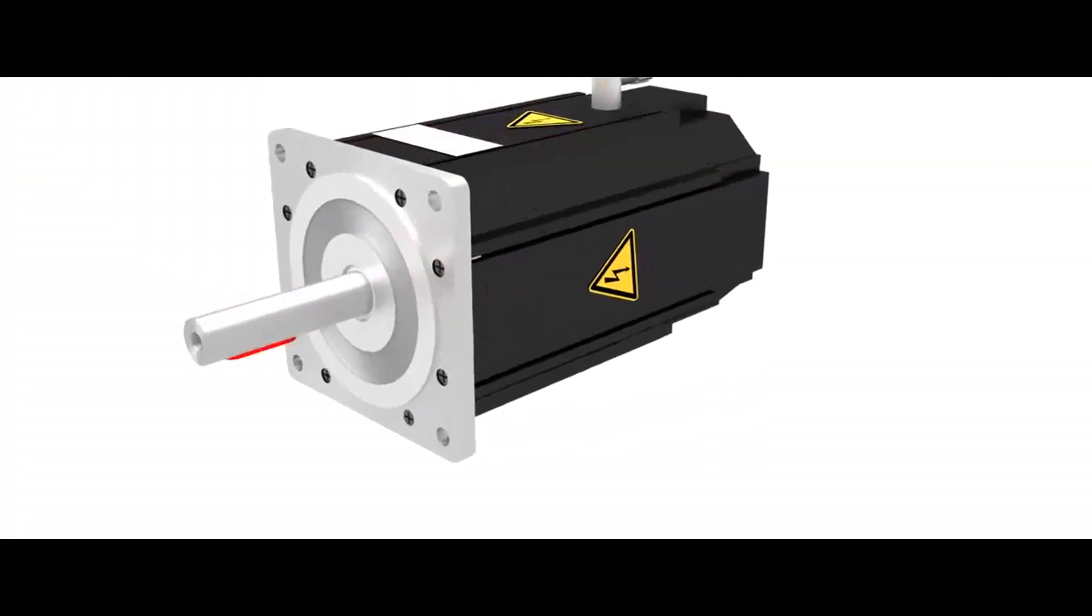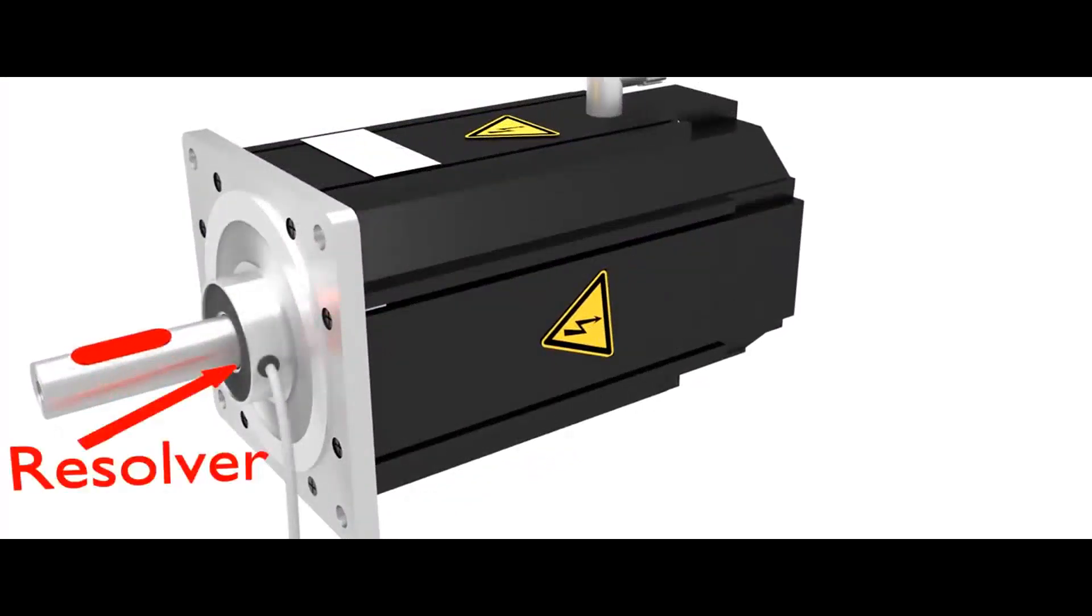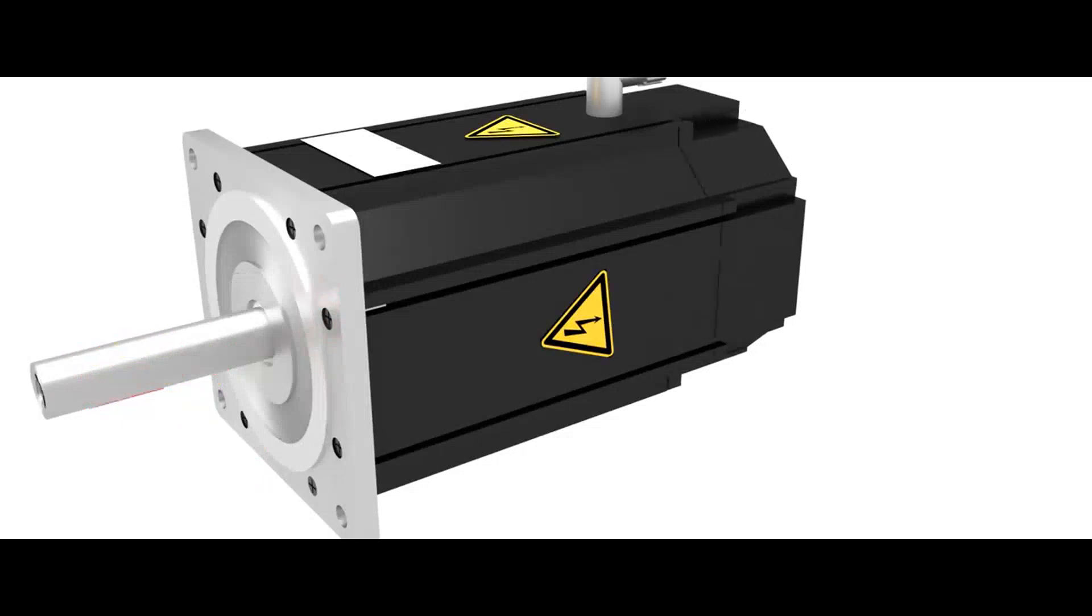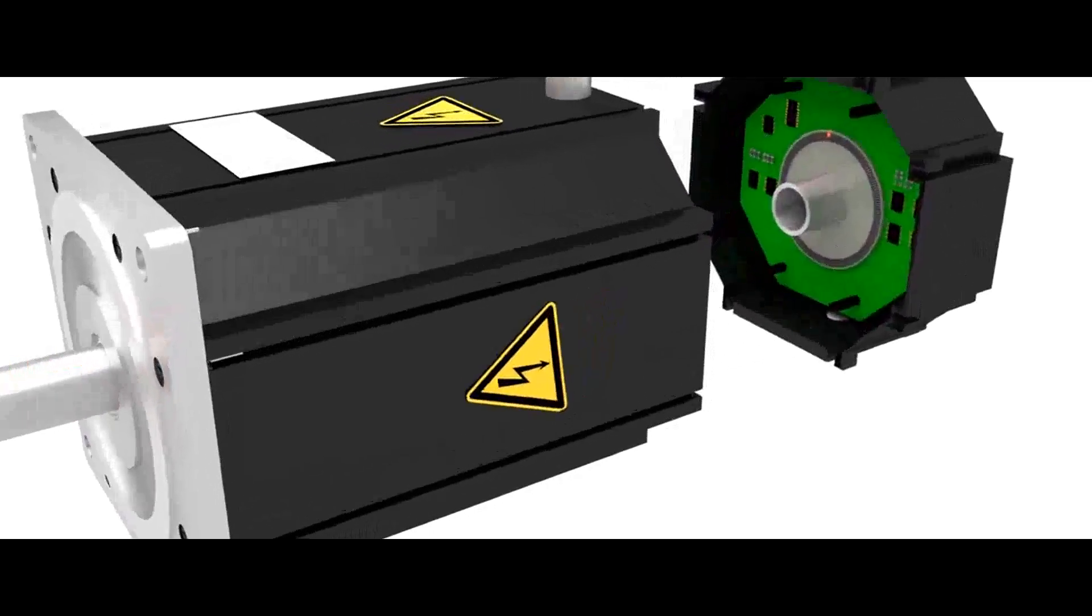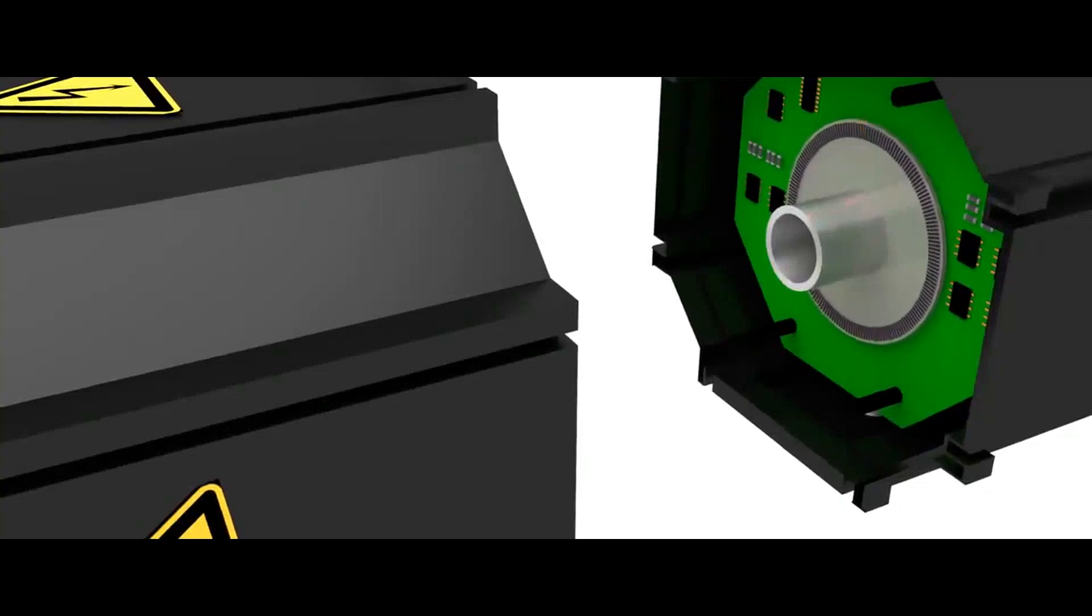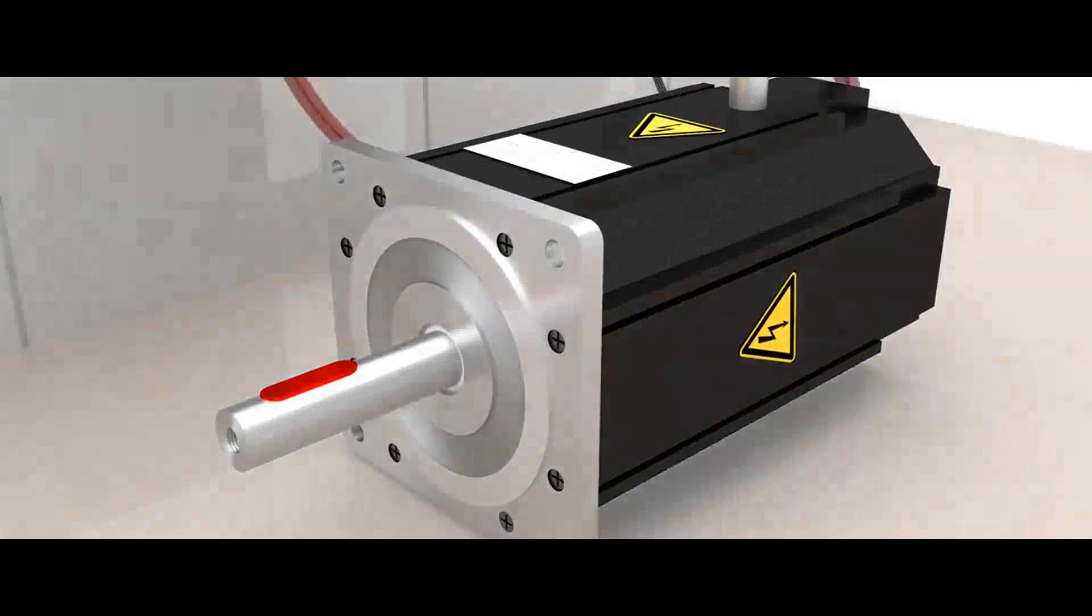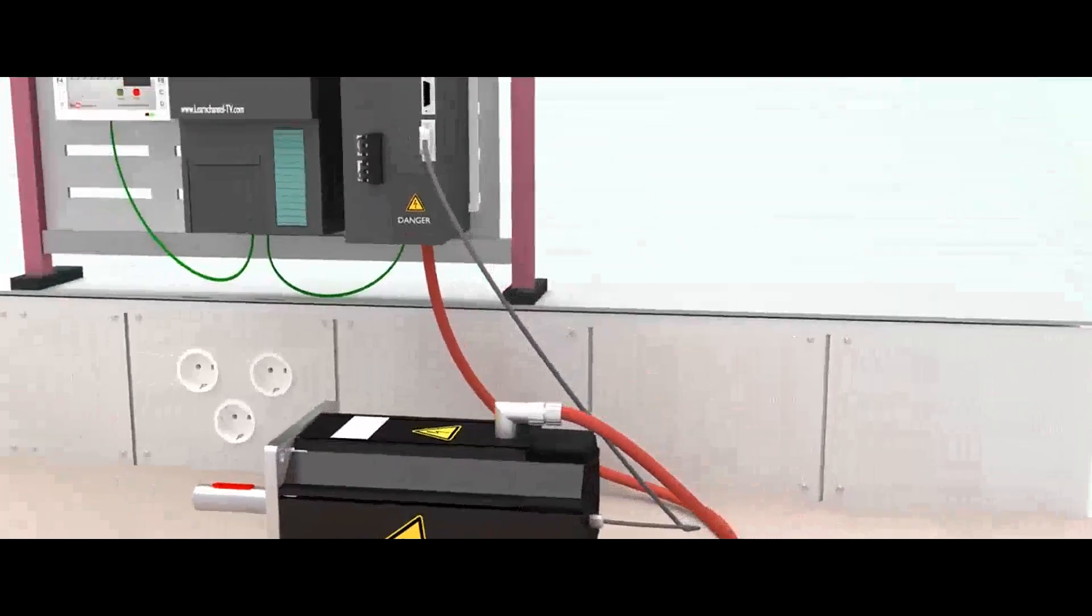Servo motor. A servo motor is a rotary actuator or linear actuator that allows for precise control of angular or linear position, velocity, and acceleration. It consists of a suitable motor coupled to a sensor of position feedback.